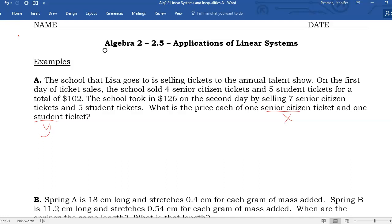On day one, I have four senior tickets and five student tickets for a total of $102. Day two, I have seven senior tickets and five student tickets for a total of $126.